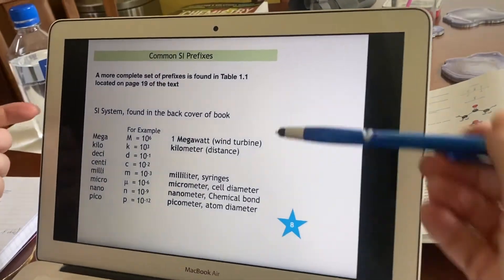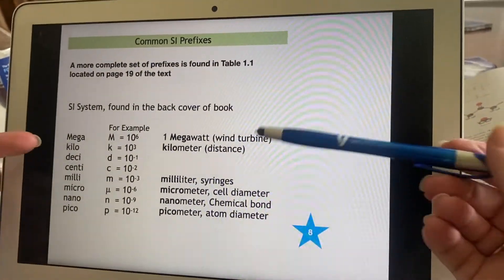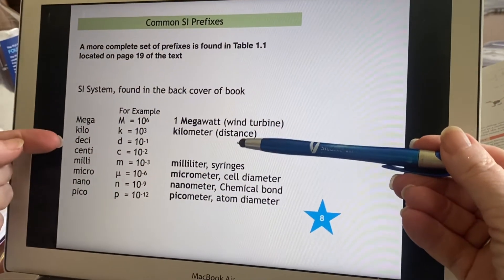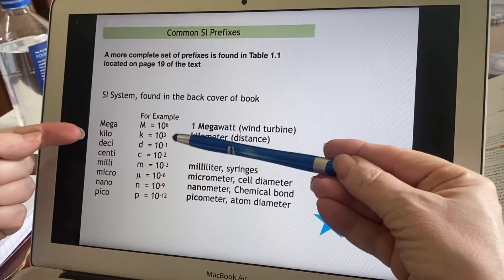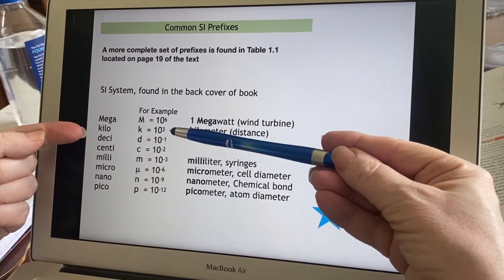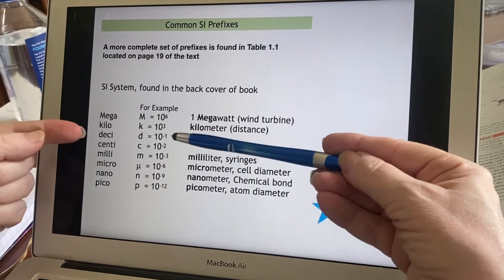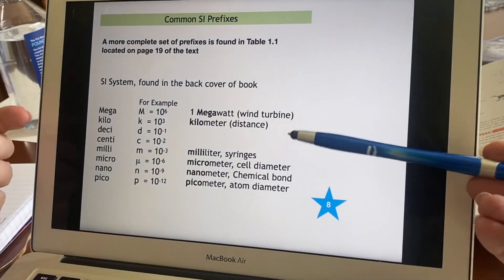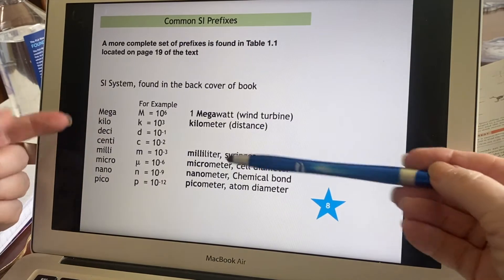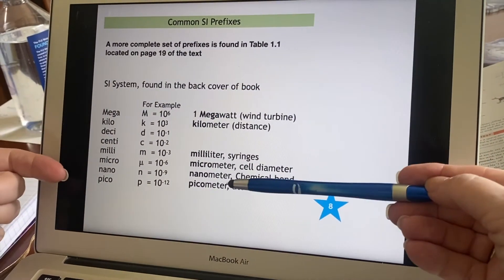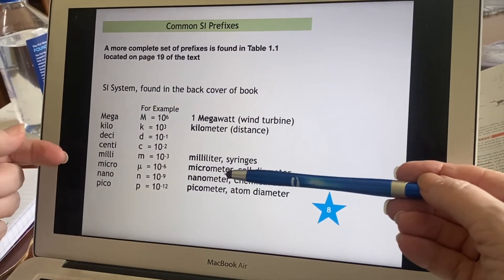If you look at the list that we have here, you'll see that I only have two that are bigger than one, the mega and the kilo. The rest of them are all listed as smaller than one because that's more likely what we will be using in chemistry. So these are the ones that are most important to us in chemistry. And we have a little examples here.